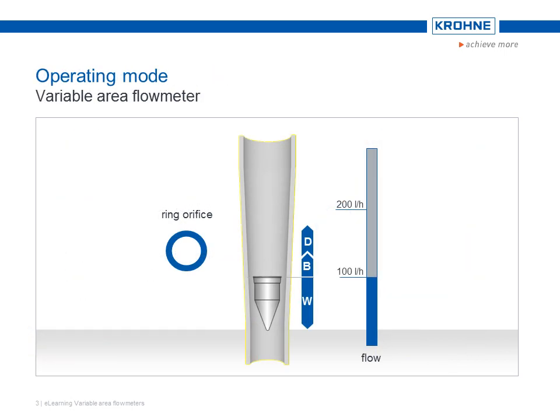To illustrate this with an example: let's take as our starting point a state of equilibrium of the forces — that is, the float remains immobile in a certain position with constant flow. If the flow increases, the flow velocity in the ring orifice also increases, and correspondingly the flow force as well. The float rises.